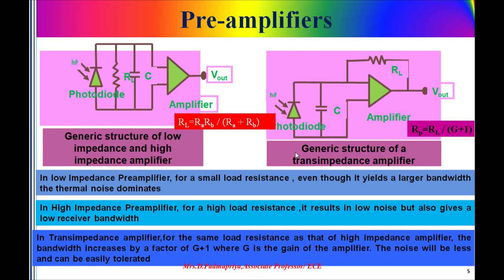The low impedance amplifier is the most straightforward one. The basic structure is shown here in the diagram. It has an effective input resistance of R_a and a bias resistor R_b in parallel with R_a, so the total load resistance R is given as R_a into R_b divided by R_a plus R_b, that is R_a connected in parallel to R_b.